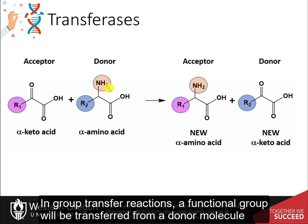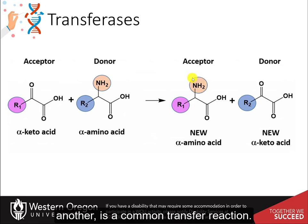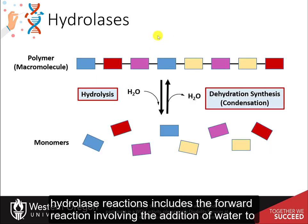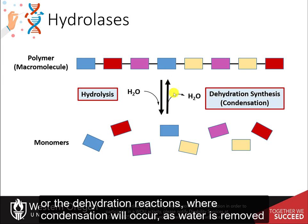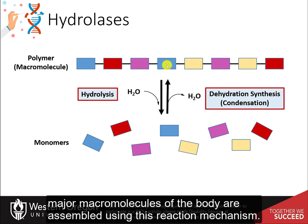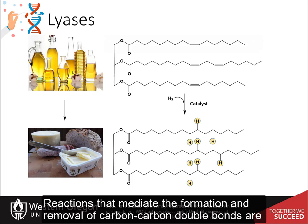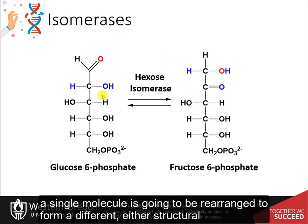In group transfer reactions, a functional group is transferred from a donor molecule to an acceptor molecule. The transfer of an amine functional group is a common example, and the enzymes are known as aminotransferases. Hydrolase reactions include the forward reaction involving the addition of water to break apart a polymer macromolecule, as well as the reverse dehydration reactions where condensation occurs as water is removed to link molecules back together. Reactions that mediate the formation and removal of carbon-carbon double bonds are classified as lyases. In isomerization reactions, a single molecule is rearranged to form a different structural or stereoisomer.